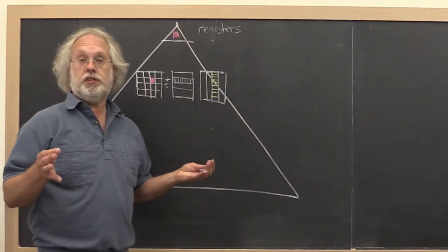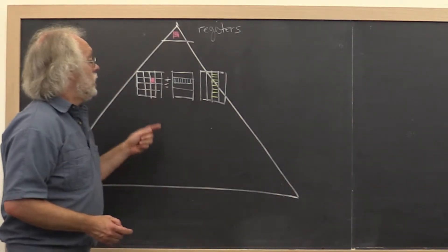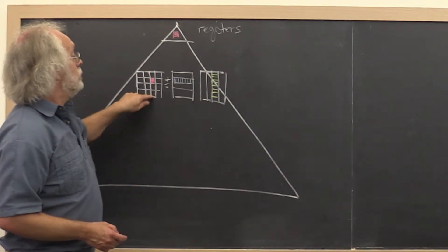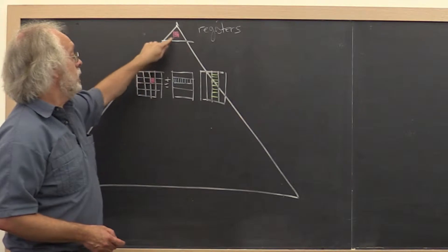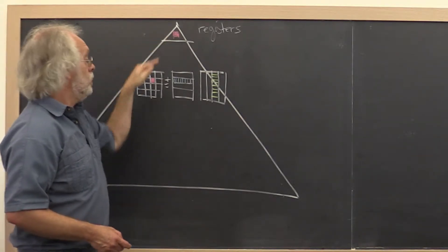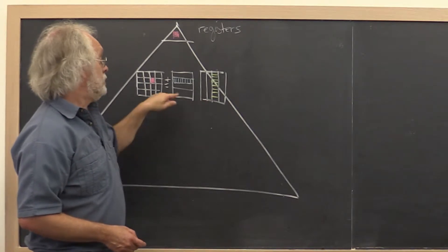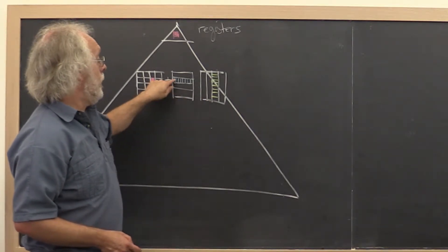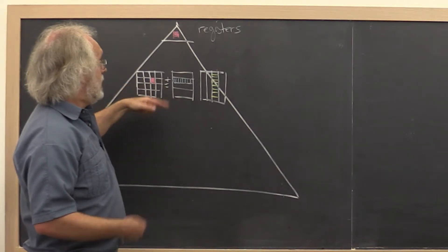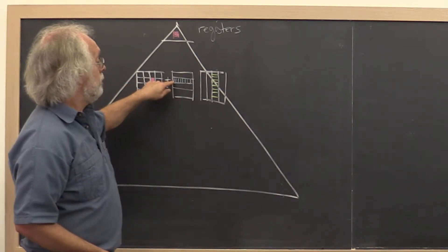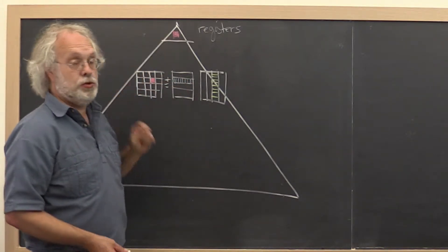By the end of week two, this is where we arrived. We had learned how to block for registers so that a microtile of C was brought into registers. We had learned to partition the matrices A and B into micropanels, and to then cast our computation in terms of a microkernel that performed rank-one updates to that microtile.